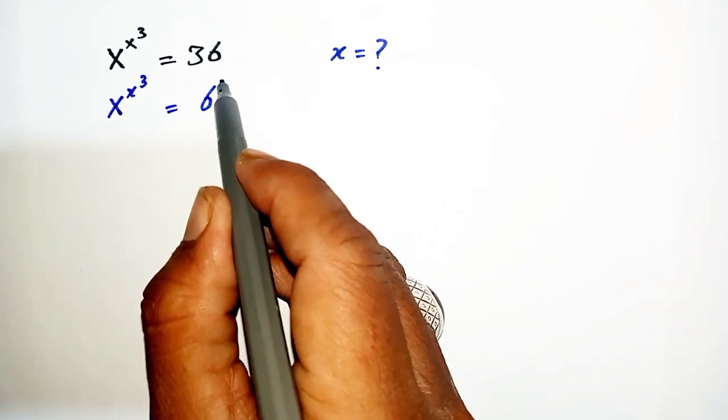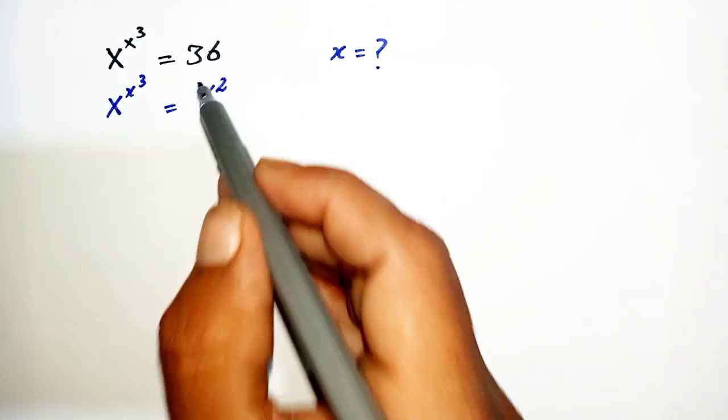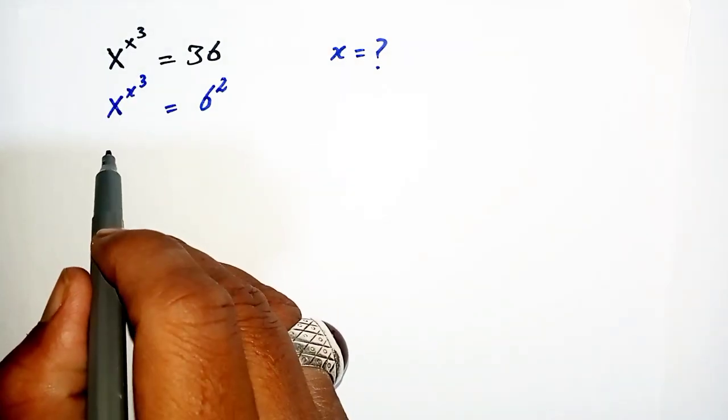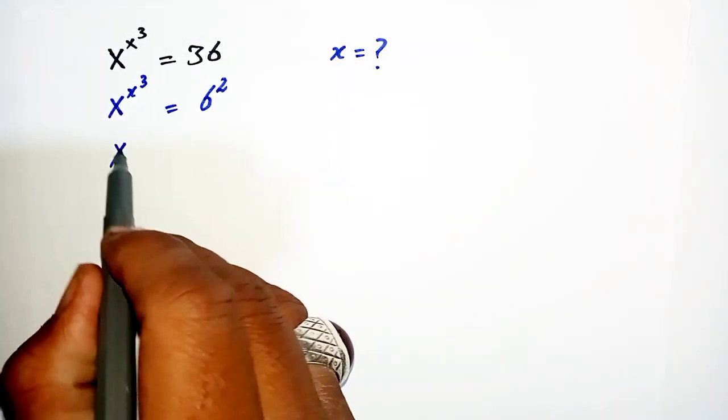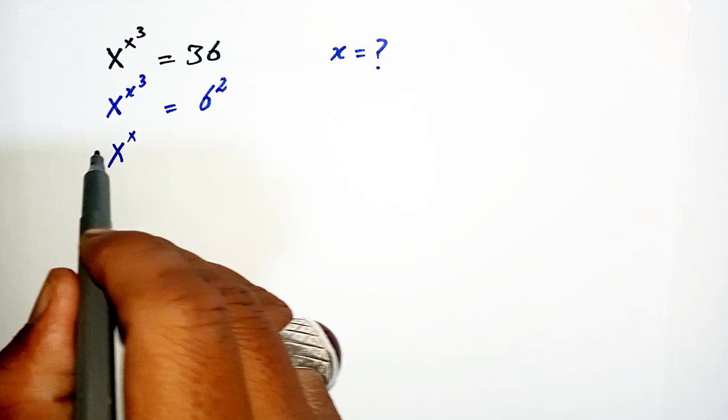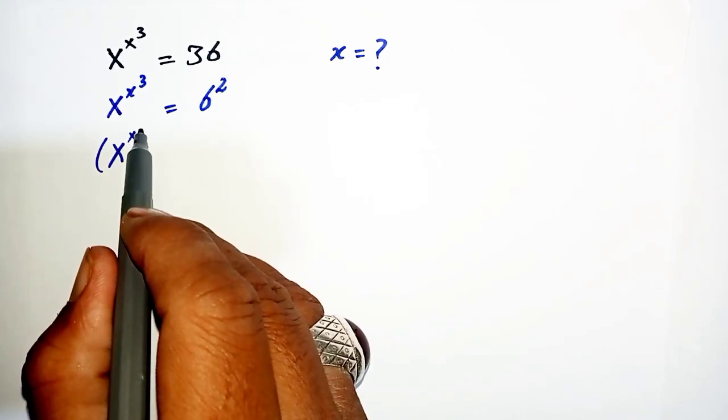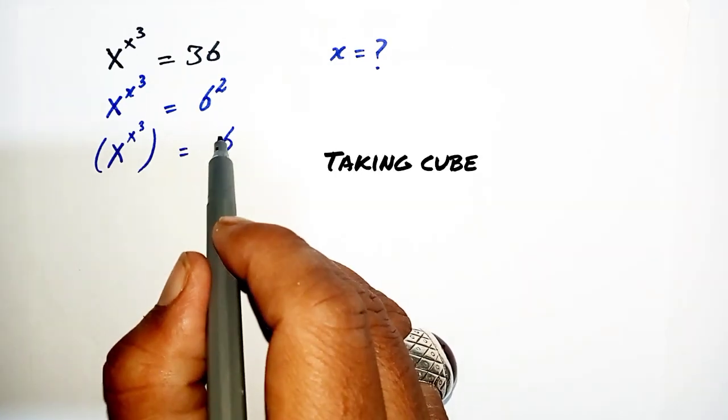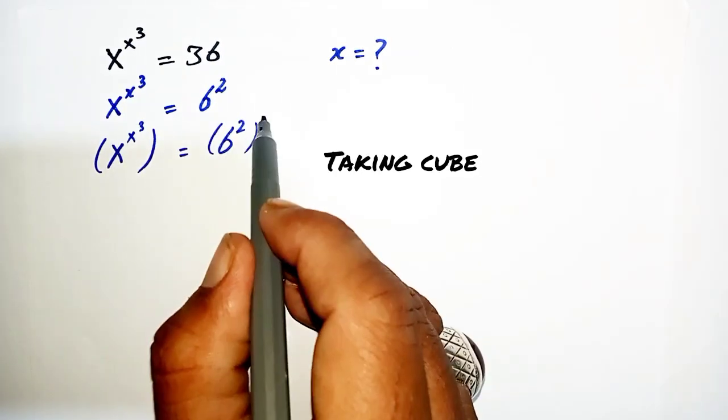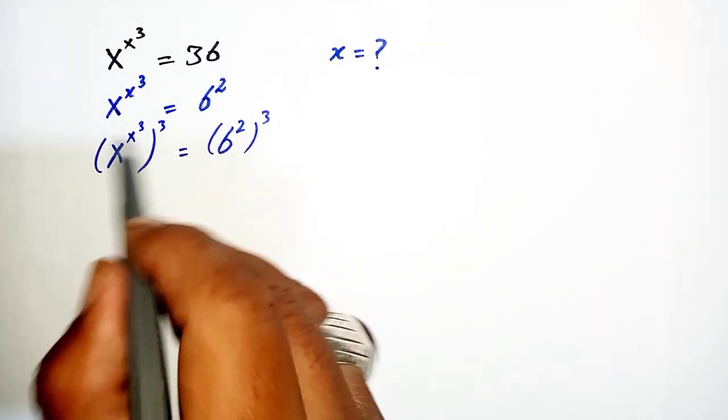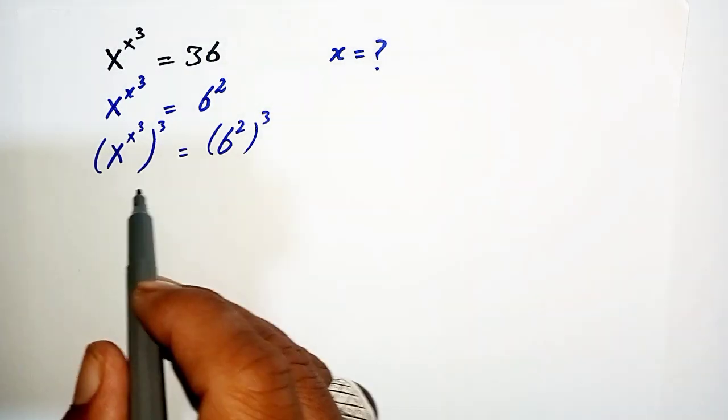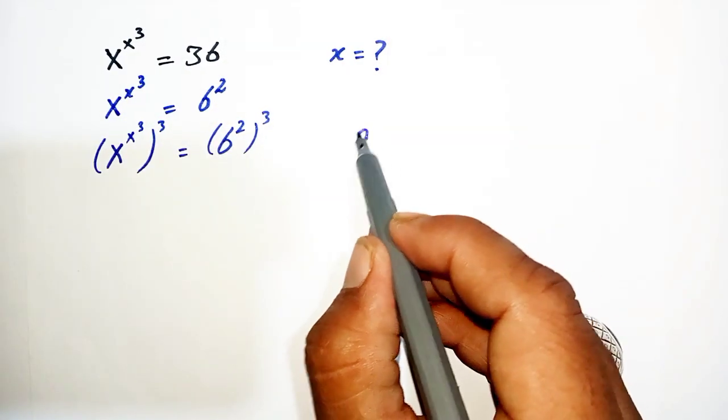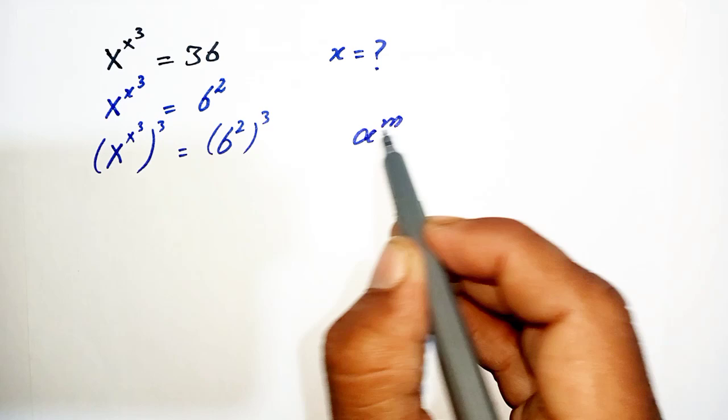Now we take a cube on both sides: (x^(x^3))^3 = (6^2)^3. We put brackets and cube on both sides like this.